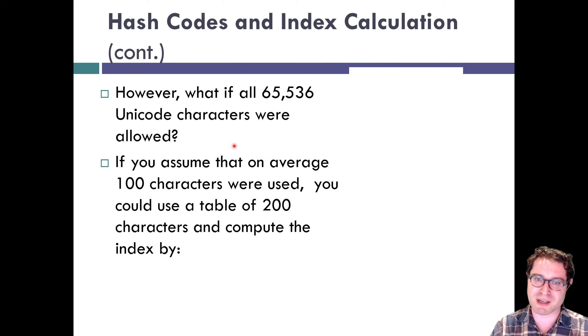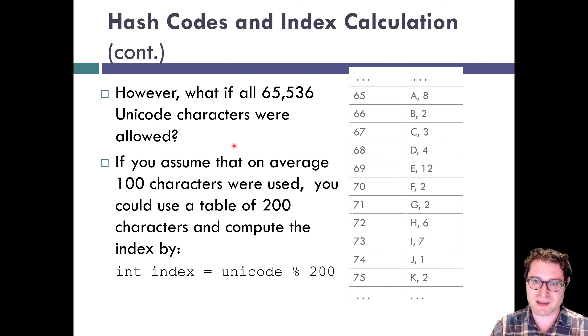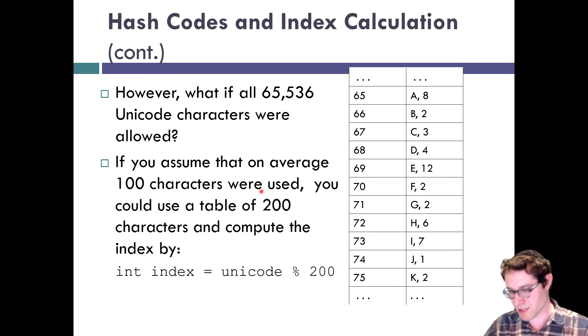But what if we were using all 65,000 possible unicode characters? If you were to assume on average 100 different characters were being used, we could just instead use a table of 200 characters and compute the index by saying rather than using a table of 65,000—because that would waste a lot of space—we're going to create an array of size 200.